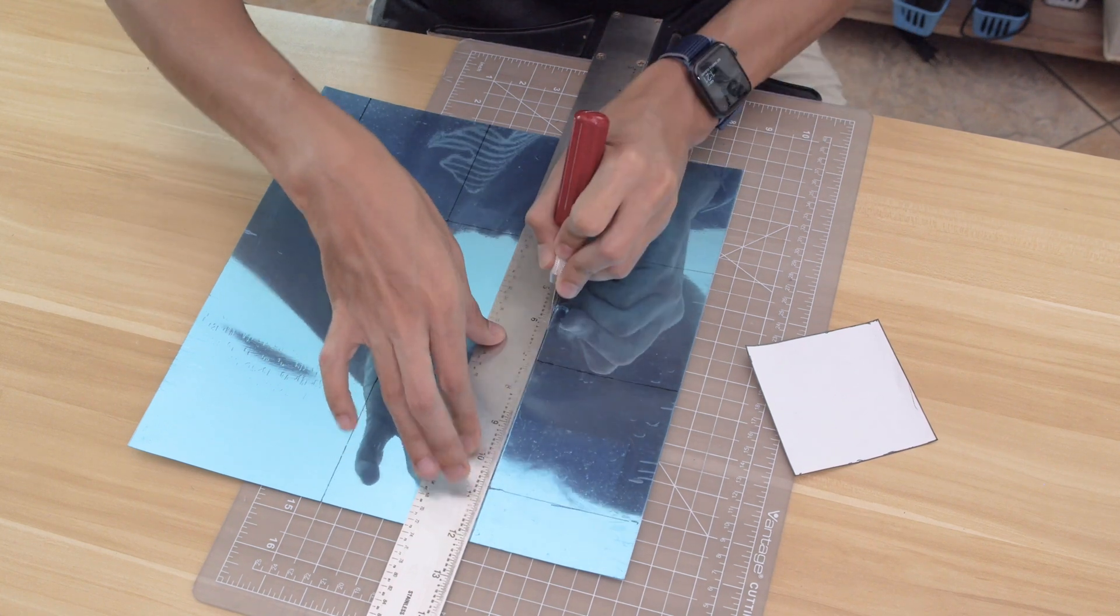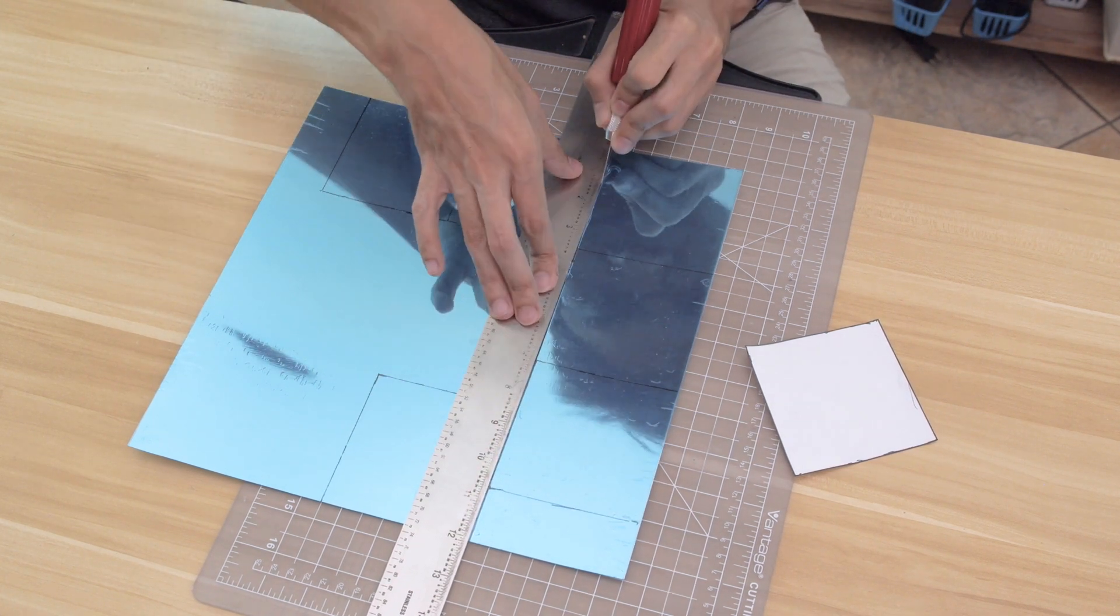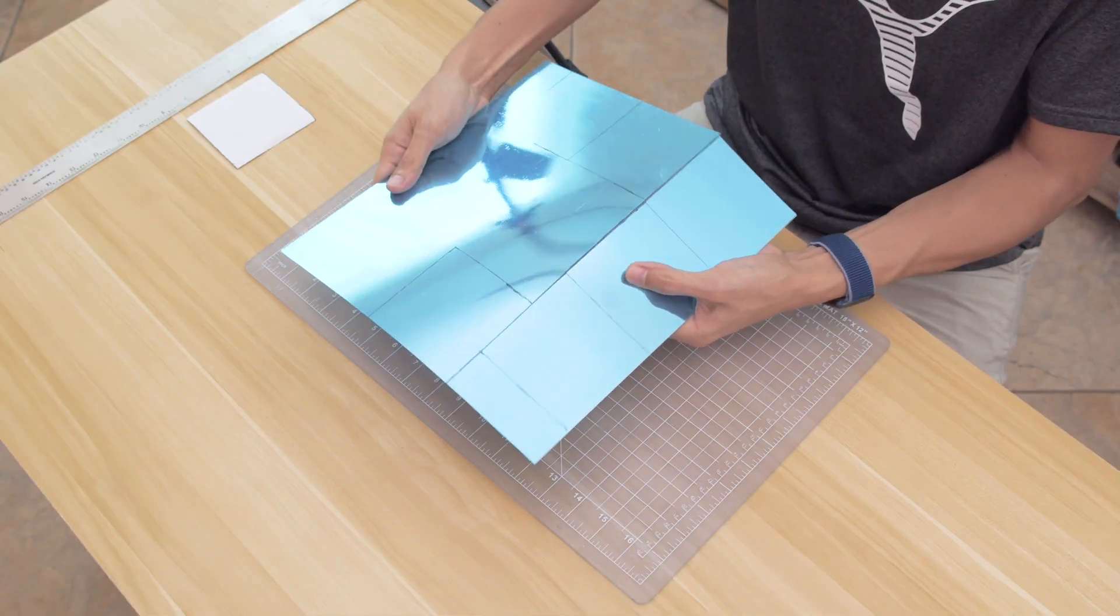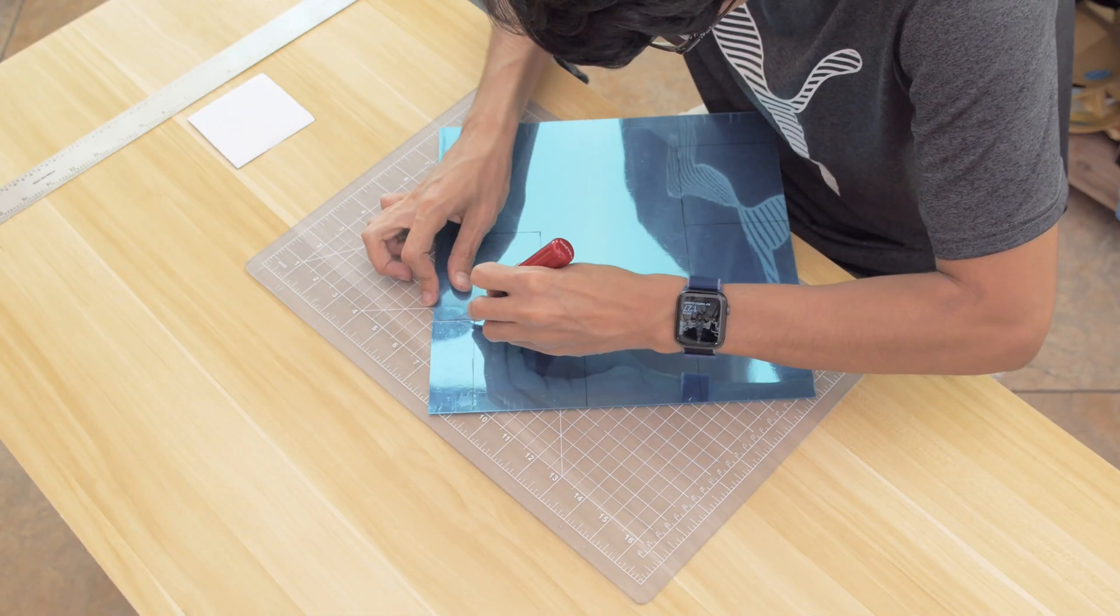We used a t-square ruler to help us make straight cuts. You'll want to be super careful here. It only needs a few passes to score deep enough so you can snap the pieces apart.